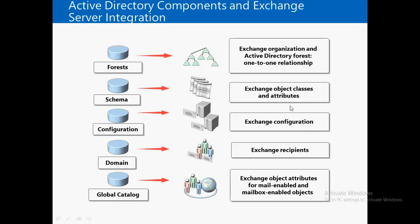Now we'll switch to the domain partition. All the objects we create in Active Directory are stored inside the domain partition, including users and groups. Exchange generally works with two types of objects from Active Directory: user objects and group objects. We can provide a mailbox to a user object and create distribution groups. Those objects are stored inside the domain partition of Active Directory but are used by Exchange. Exchange 2013 does not use the application partition at all.